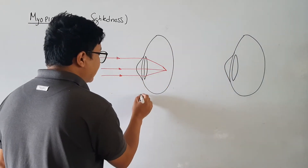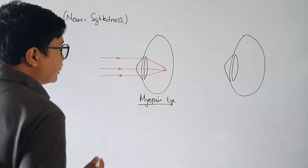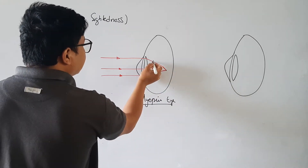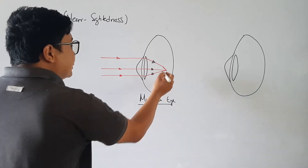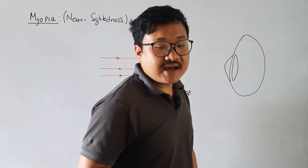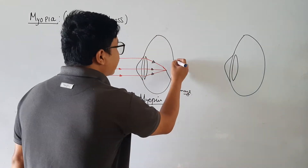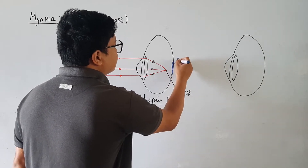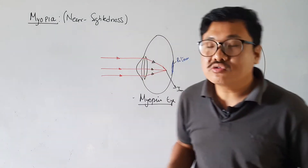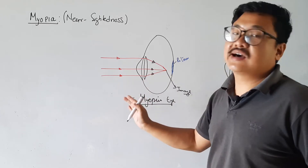If you see here, this is a myopic eye — you can check this in your book also. These are the rays coming from the object, and this is the point at which all the rays are meeting. But in the human eye, the image should be formed on the retina. In myopia, it is not formed on the retina; instead, it is formed in front of the retina. This is the cause of the defect.